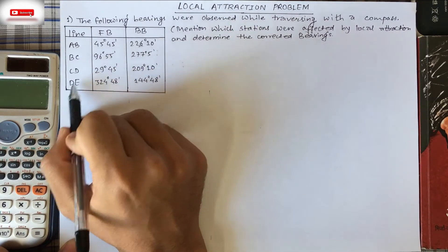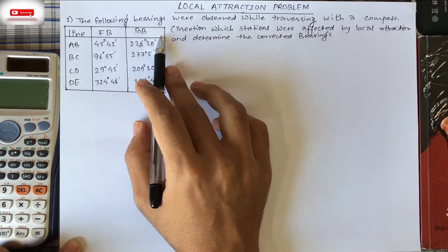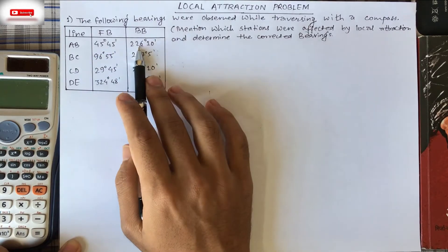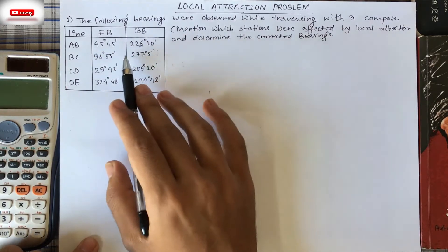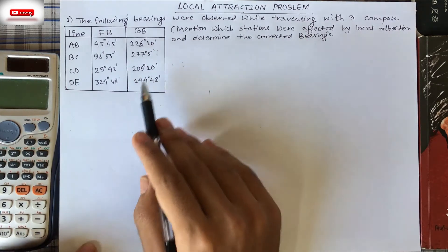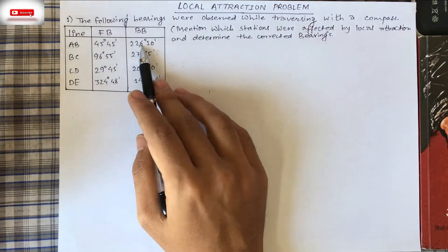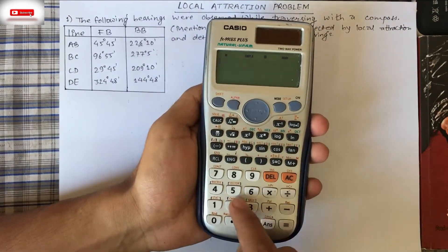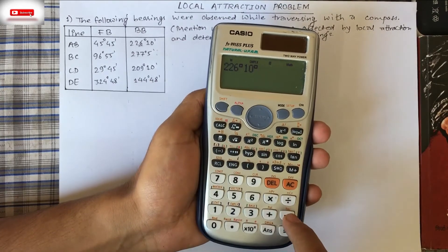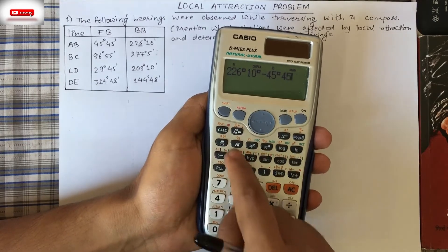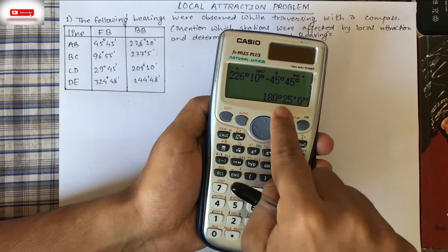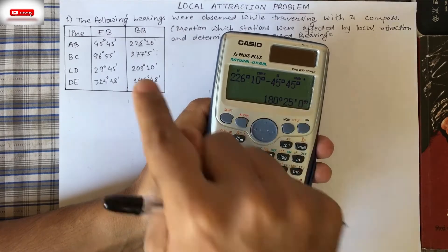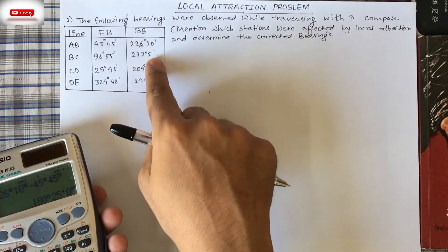Our lines are AB, BC, CD, and DE. This is the fore bearing and this is the back bearing. For line AB, our fore bearing is given as 45°45' and the back bearing for the same line is 206°10'. Here we have to find whether the given station is affected by local attraction or not. By subtracting the fore bearing from the back bearing, we have to get exactly 180°. We will do the same check for BC, CD, and DE.